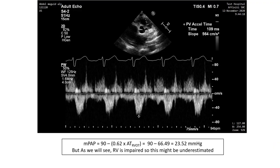When we go to the parasternal short axis view and put continuous wave over the RVOT and calculate the RVOT acceleration time, that was 66.4 ms, we get a mean pulmonary artery pressure of 23 mmHg. So the right ventricular systolic pressure and the mean pulmonary artery pressure are not very high, but this can be explained by the impaired right ventricular function that we will see in the next images.